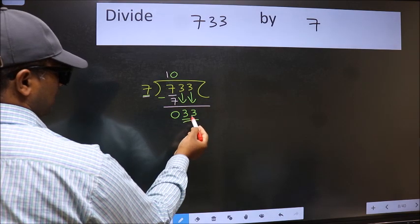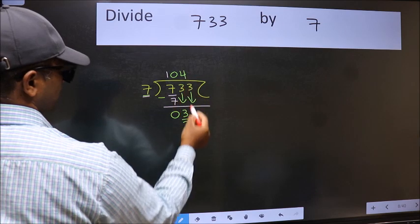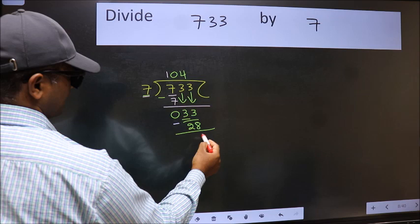Now 33. A number close to 33 in 7 table is 7 fours 28. Now we should subtract. We get 5.